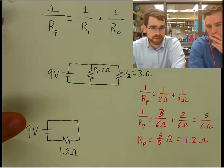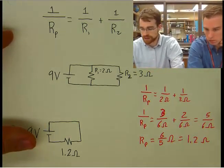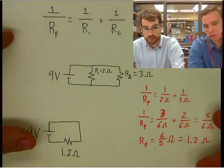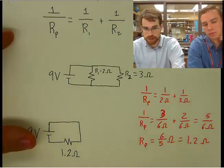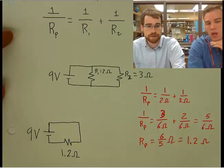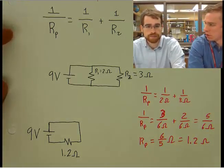And then we once again have to take the reciprocal of that. So instead of our answer being 5 over 6, we're going to flip that information, and that becomes 6 over 5. And then we can reduce it to 1.2 ohms.